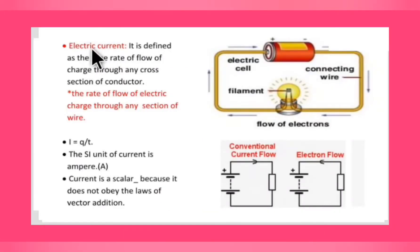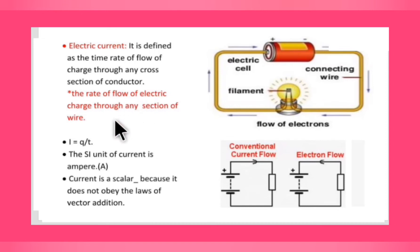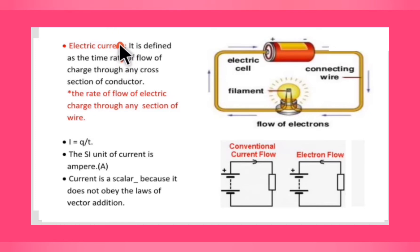So, what is electric current? It is defined as the time rate of flow of charge through any cross section of a conductor. Or, the rate of flow of electric charge through any section of wire is called current. So the rate deals with the time at which the charge is flowing.